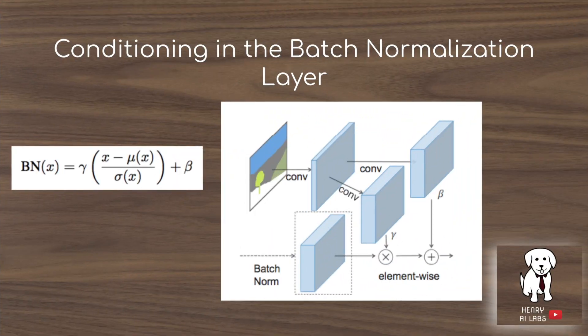The key idea here is that the conditioning is going to be done in the batch normalization layer. Rather than concatenating the class label onto some intermediate feature of the generator, the conditioning is done in the normalization layer. A batch normalization layer takes a channel or an entire height-width feature map and normalizes it so it has a mean defined by the gamma parameter and a variance defined by the beta parameter.